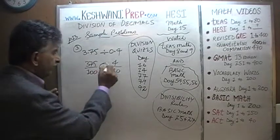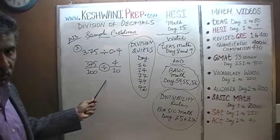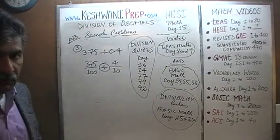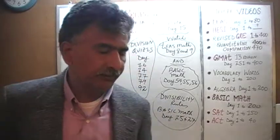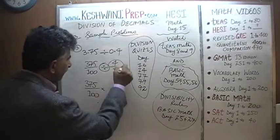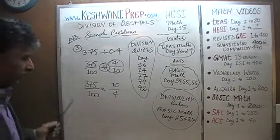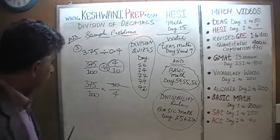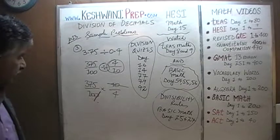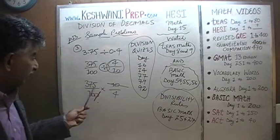Convert the division sign to multiplication and take the reciprocal of the second fraction: 4 over 10 becomes 10 over 4. So we have 375 over 100 times 10 over 4. Divide top and bottom by 10 — the 10 goes away and 100 loses one zero, becoming 10. Now we have 375 over 10 times 1 over 4. Notice 375 ends in a 5, so it is divisible by 5.